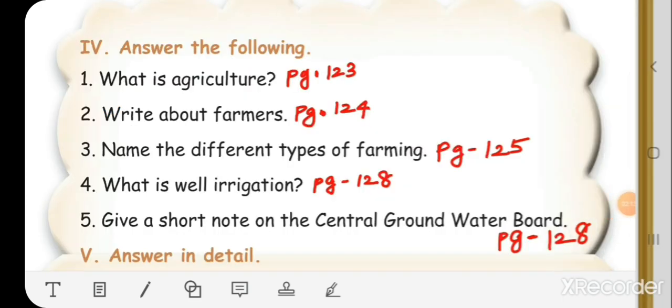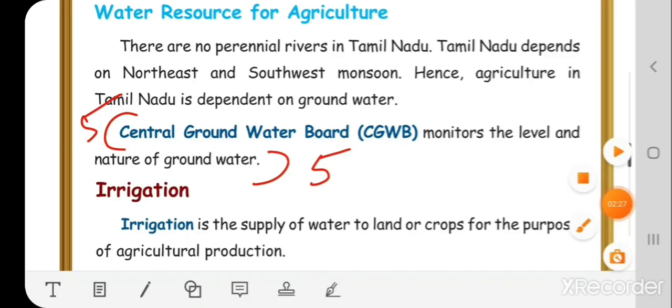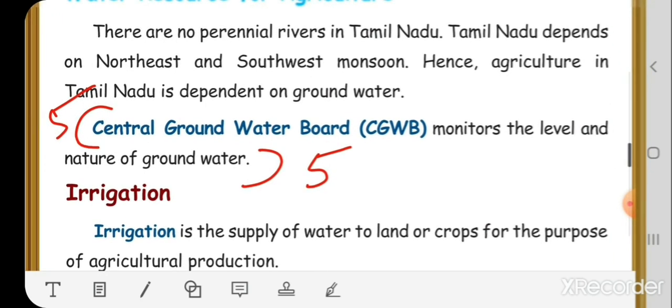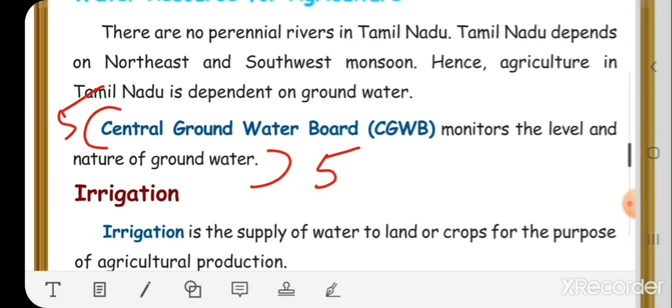Fifth question: Give a short note on the Central Ground Water Board. This answer is also on page number 128. Central Ground Water Board (CGWB) monitors the level and nature of groundwater.